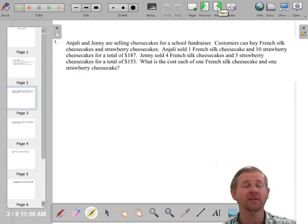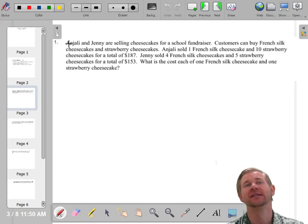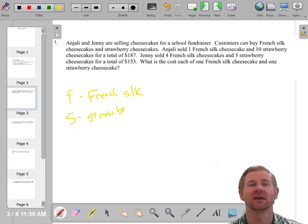The first thing we're going to do is define some variables. This says Anjali and Jenny are selling cheesecakes and they could buy French silk cheesecakes and strawberry cheesecakes. So let's do F for French silk. I don't know what that is. And then we'll do S for strawberry cheesecakes. It looks like you sold one French silk cheesecake and 10 strawberries for 187 and four French silks and five strawberries for 153. Pretty much all of these equations are going to feel very similar.